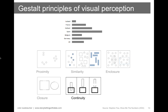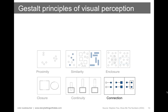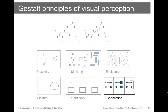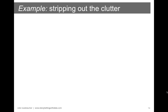The continuity principle says if we take connected objects and pull them apart, most people expect to see them as two continuous curved lines rather than other possible configurations. One thing the Gestalt principles let us do is question things that are there and consider stripping them out. For example, if I don't show the y-axis and instead let the bars stand, we can see they're all lined up at the same point — and arguably our data stands out a little bit more.